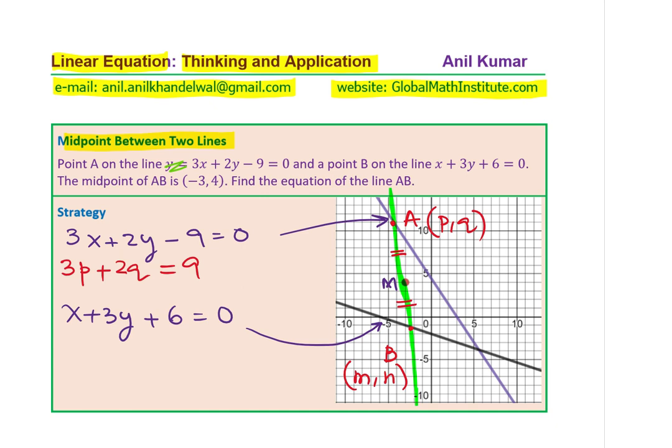And similarly, write the other equation in terms of M and N. So M for X plus 3N equals minus 6. So substituting the points, we get these two equations.